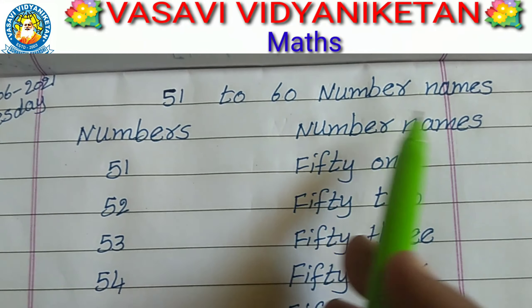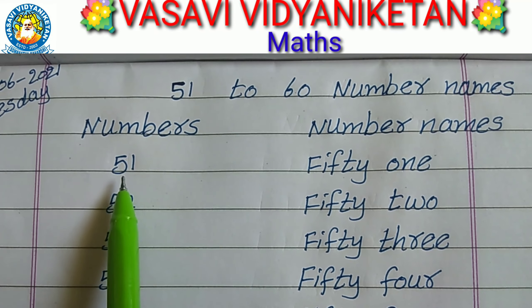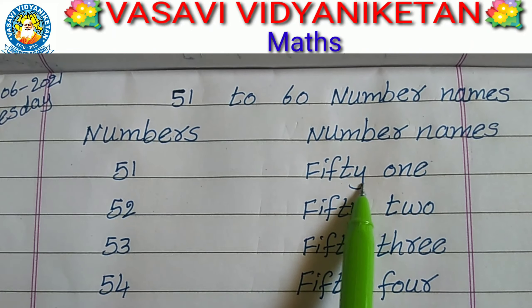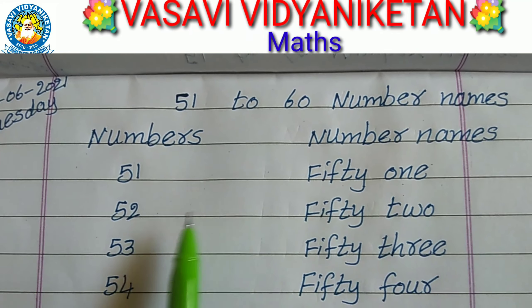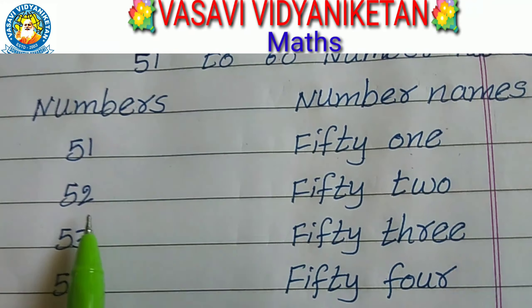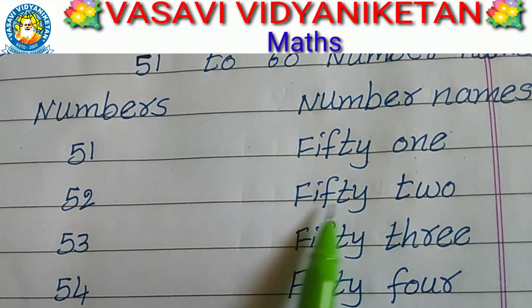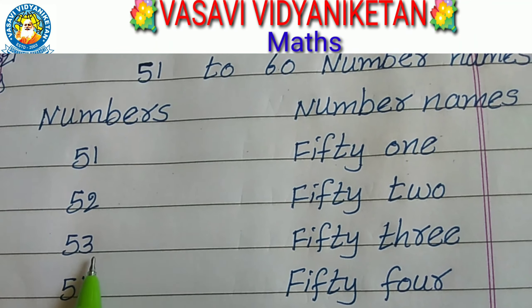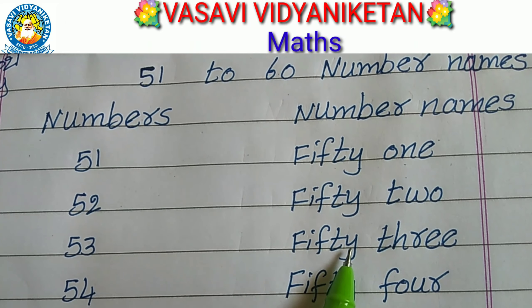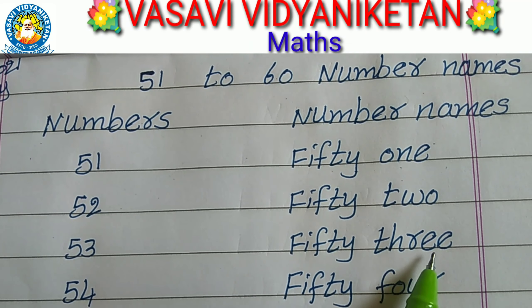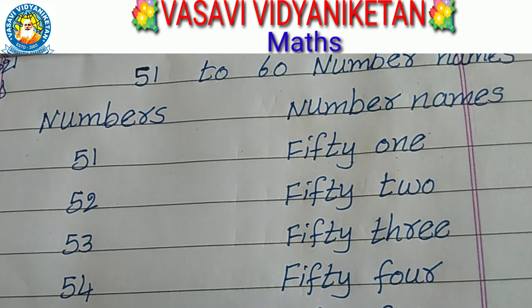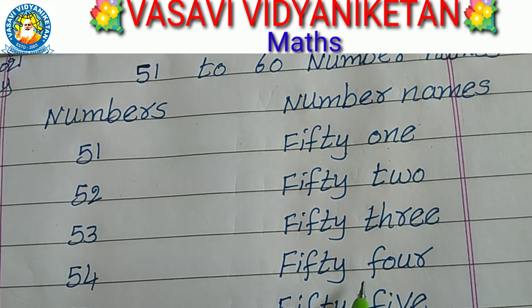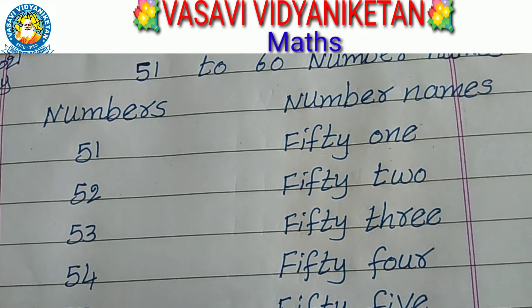Numbers. Number names. 51. F-I-F-T-Y O-N-E. 51. 52. F-I-F-T-Y T-W-O. 52. 53. F-I-F-T-Y T-H-R-E-E. 53. 54. F-I-F-T-Y F-O-U-R. 54.